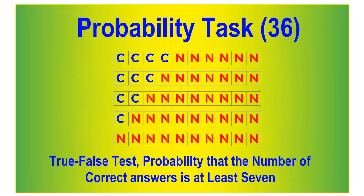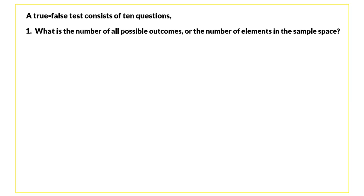In this video we will study the probability that the number of correct answers is at least 7 in a true-false test composed of 10 questions. The first issue is: what is the number of all possible outcomes, or the number of elements in the sample space?